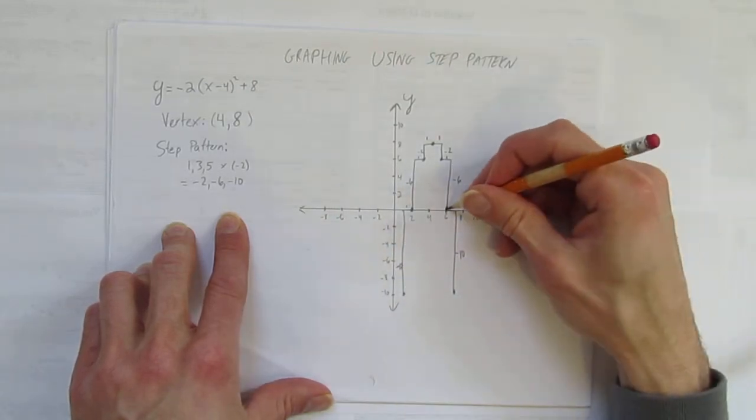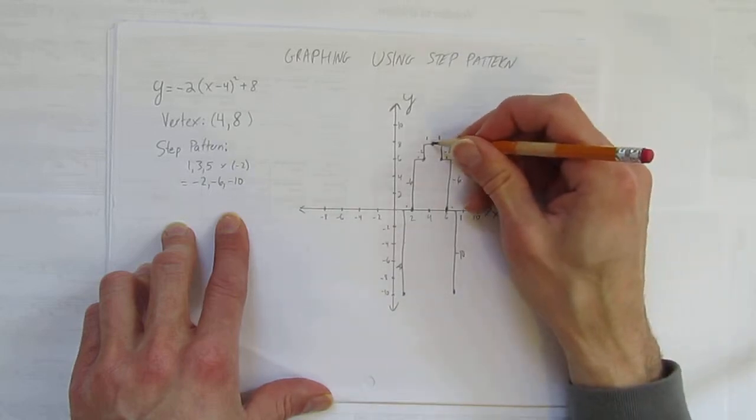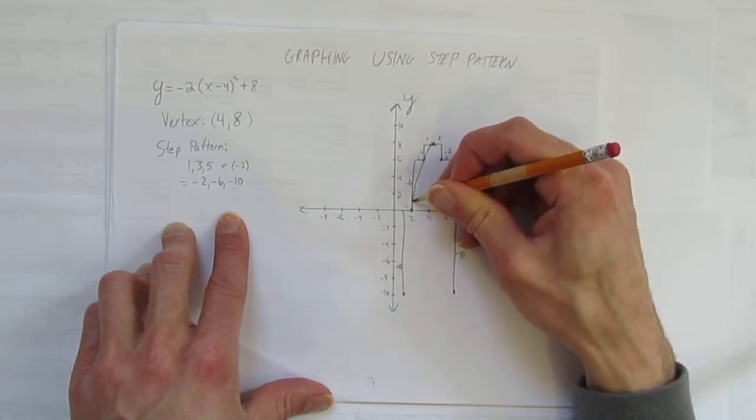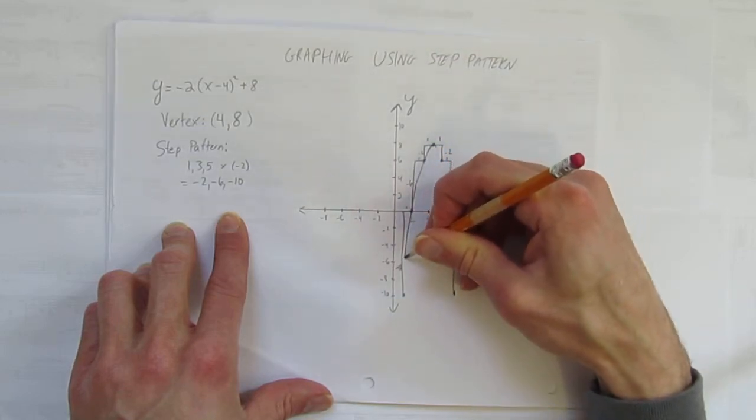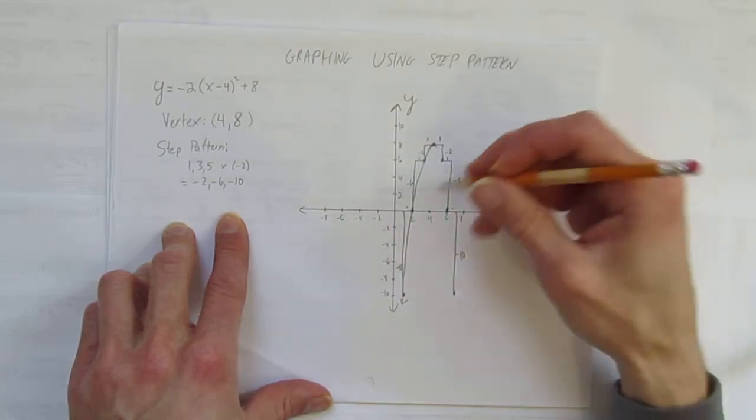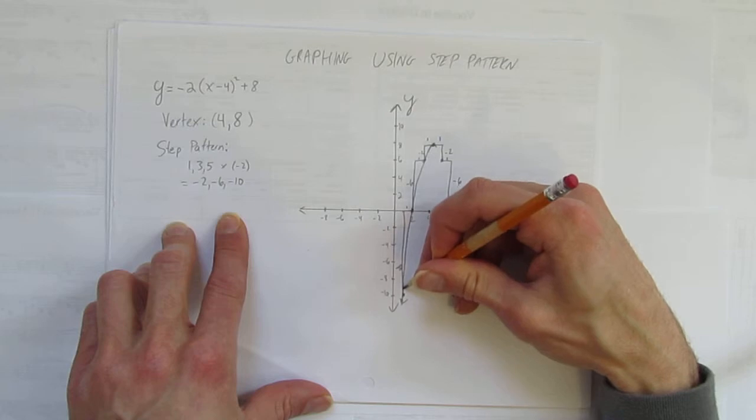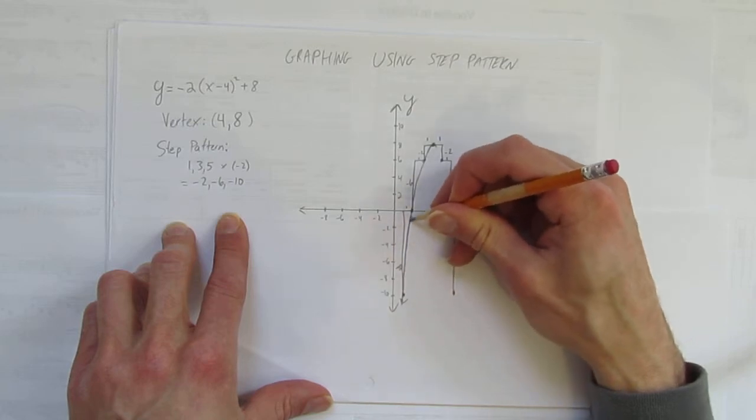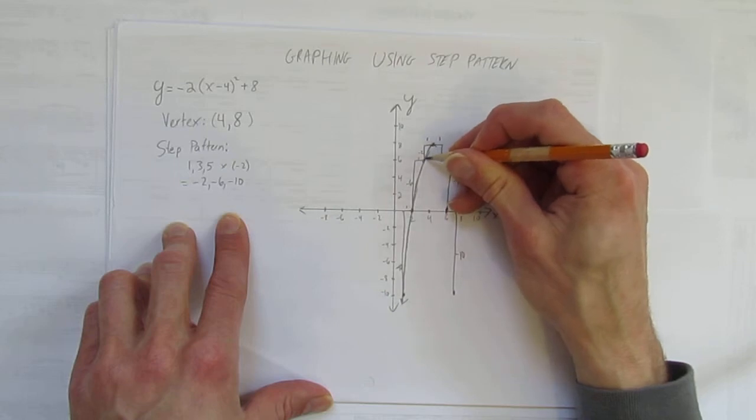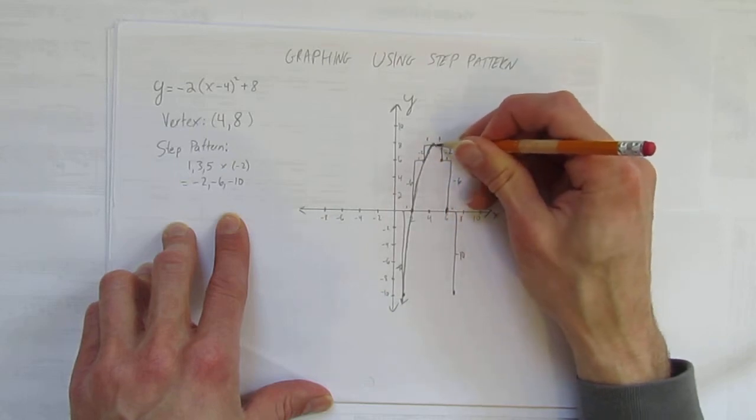And now I have my points, and I can connect them in a parabola. Make sure it's a nice U shape, not a V. And draw a nice curve going through each point that you've made using your step pattern. And put an arrow on the end. There's one side of the parabola. It'll make it a little darker in case it's hard to see on the video. There it is. Come around for this side.